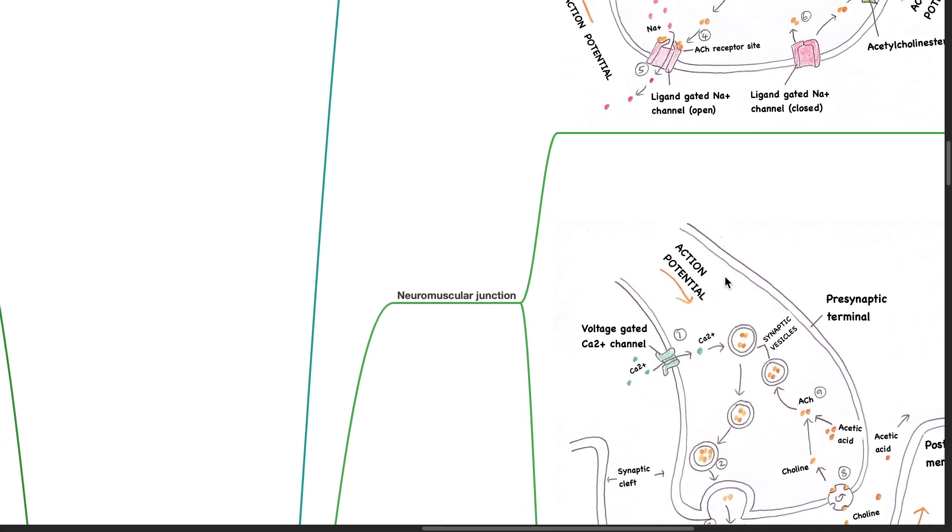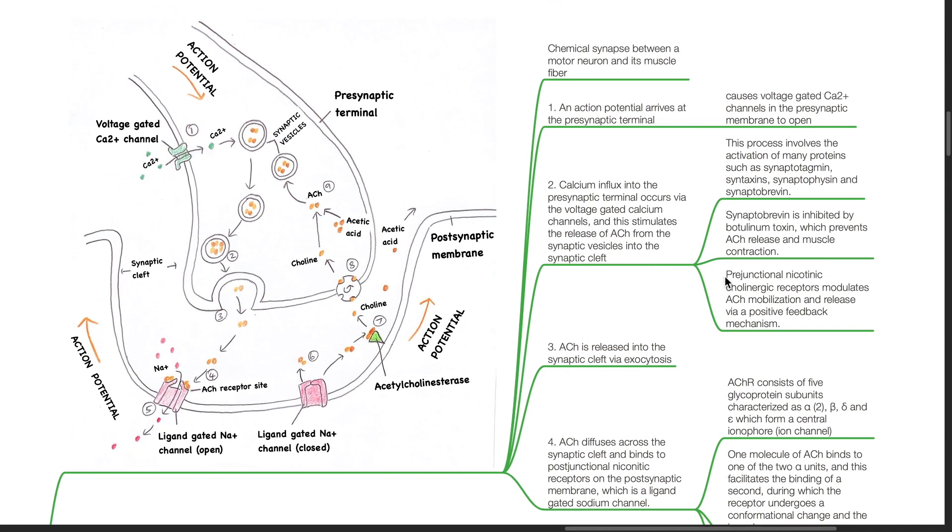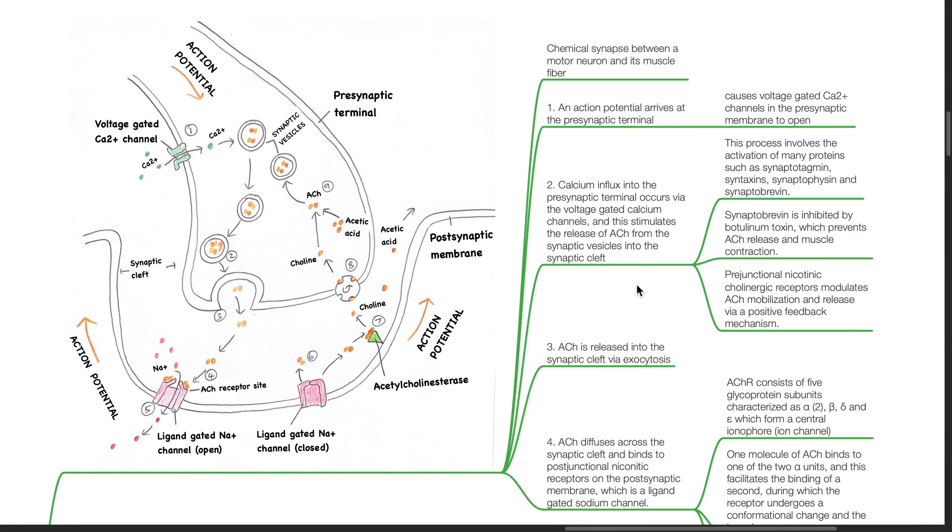The neuromuscular junction is a chemical synapse between a motor neuron and its muscle fiber. An action potential arrives at the presynaptic terminal, causing voltage-gated calcium channels in the presynaptic membrane to open. Calcium influx into the presynaptic terminal occurs via the voltage-gated calcium channels and this stimulates the release of acetylcholine from the synaptic vesicles into the synaptic cleft.